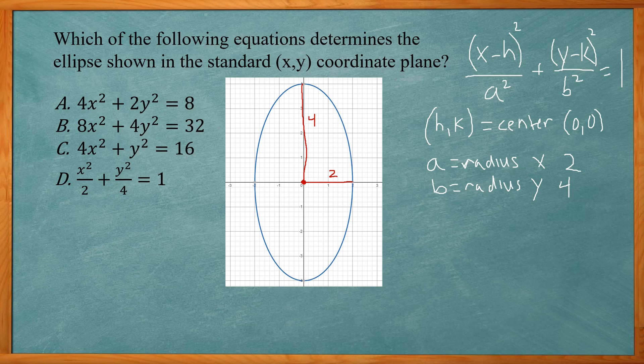So then we'll plug that into our equation. That's going to be (x-0) over 2 squared plus (y-0)—sorry, these are quantity squared—over 4 squared is equal to 1.